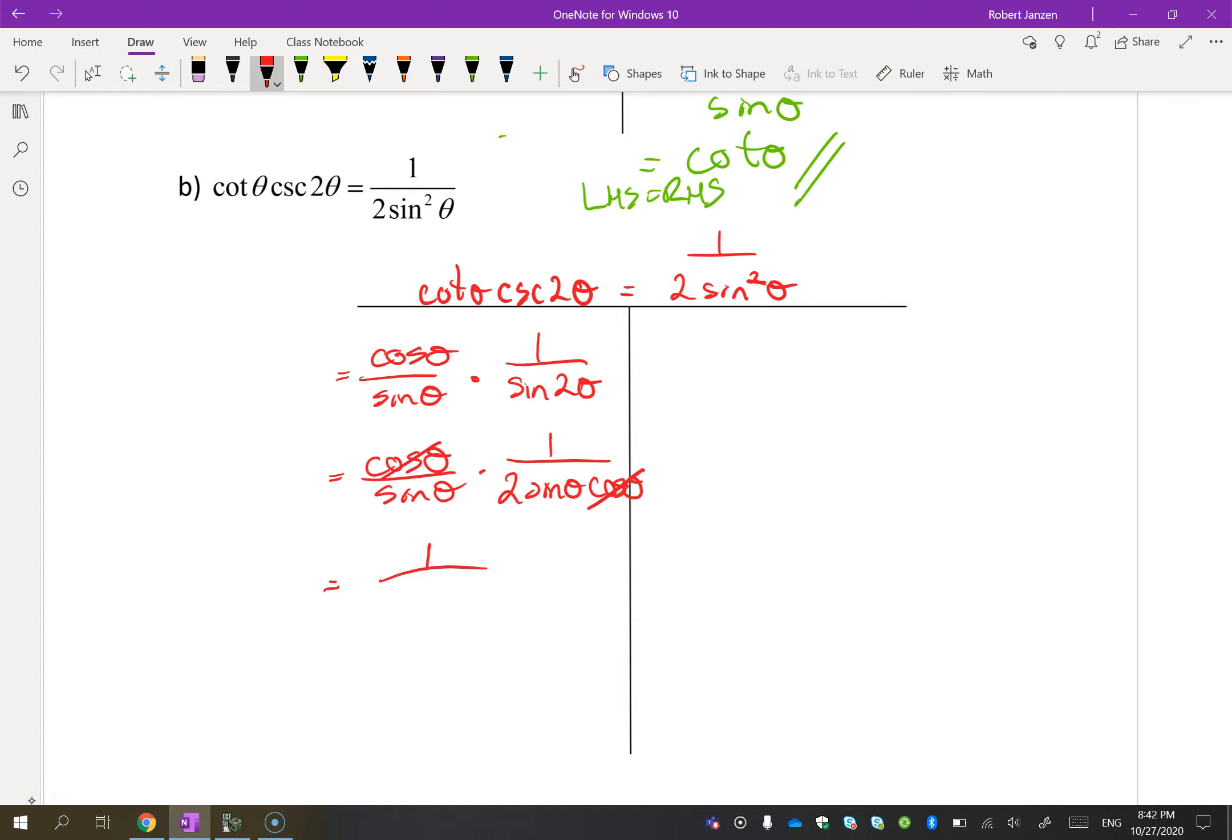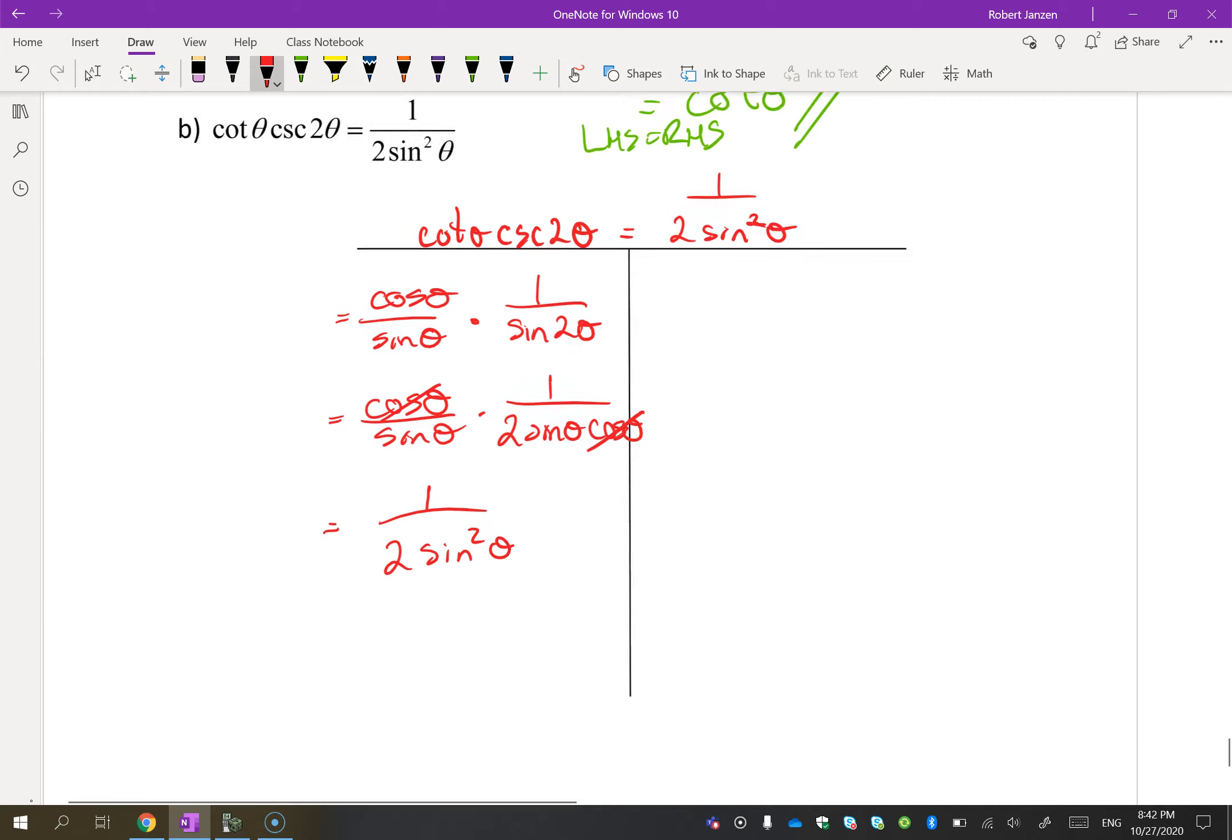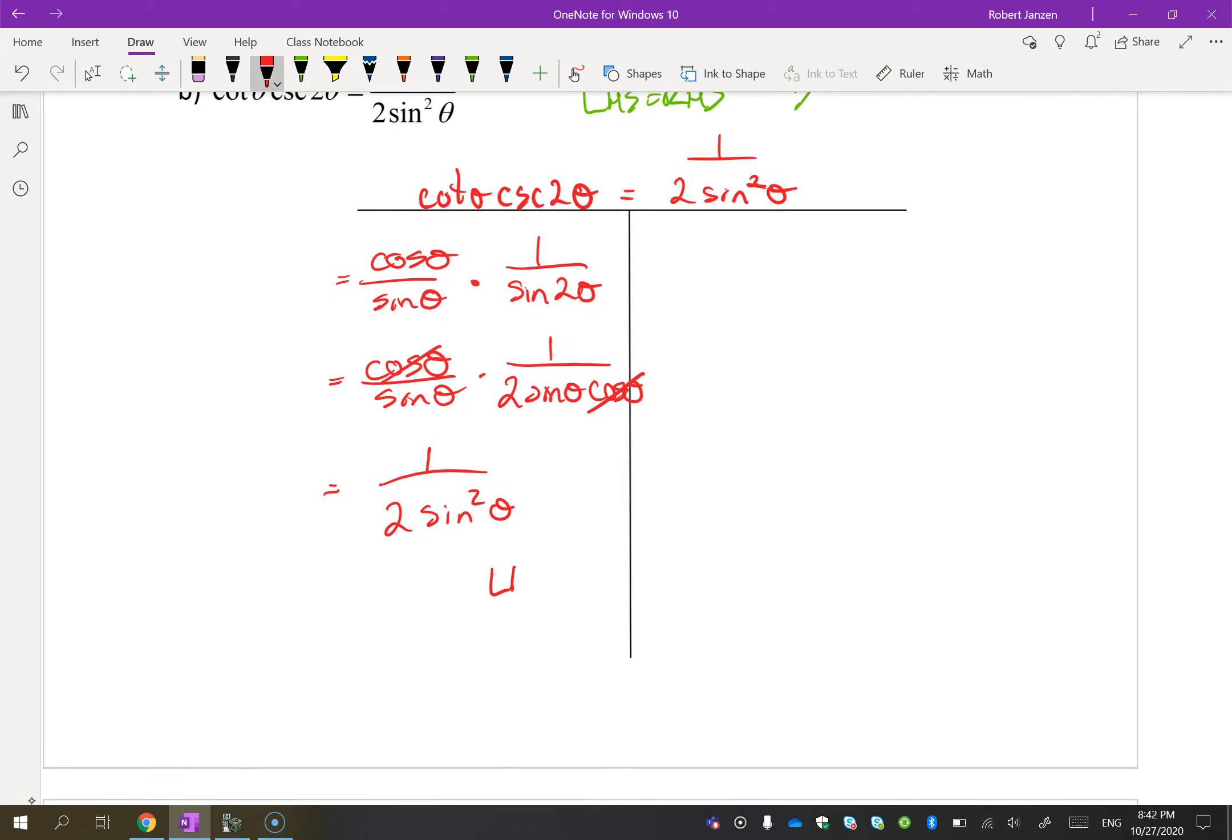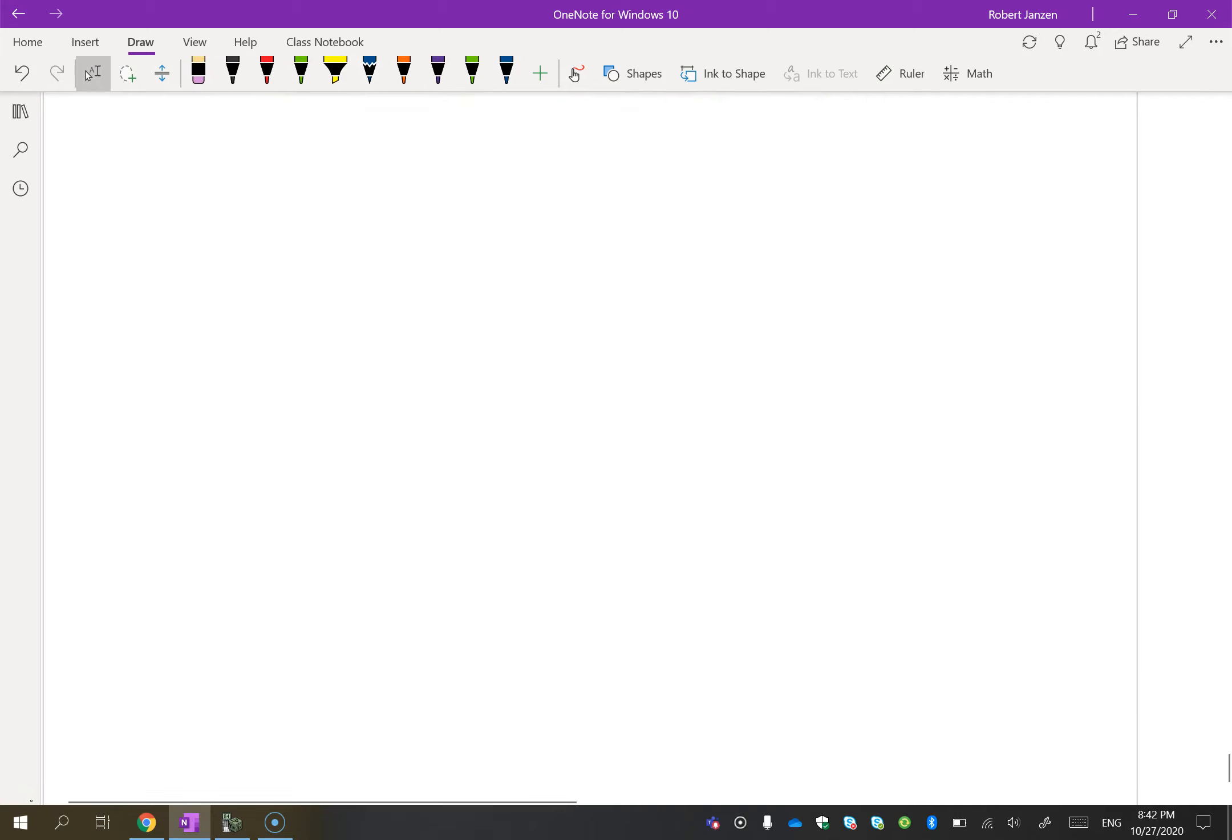This is 1 over 2 sine squared, which happens to be where I want to end up. So, the left-hand side equals the right-hand side.